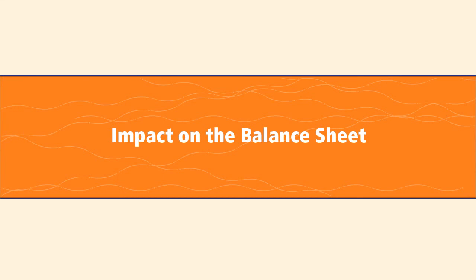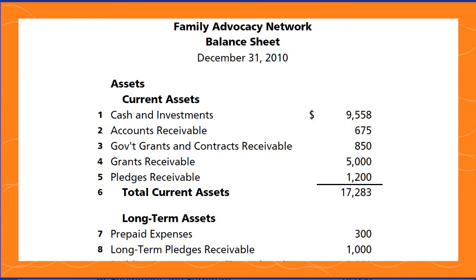Understanding the income statement is helpful, but we need to look at the balance sheet to get the full picture of cash versus accrual accounting. Looking at this sample balance sheet under the assets category, we can already tell we're using an accrual-based system because we're recording assets that haven't been received yet. Under current assets, we see cash and investments — the liquid assets already here — but right under that we have accounts receivable, grants receivable, and pledges receivable. Those incomes have been booked and we know they're going to be here, but they're not yet cash.